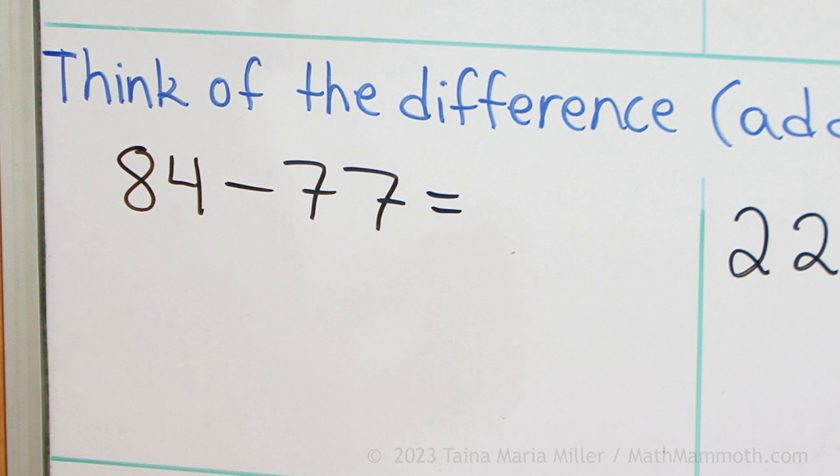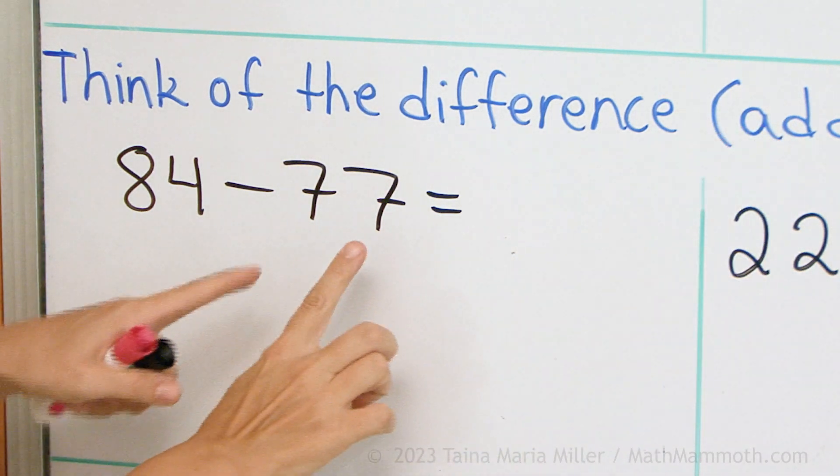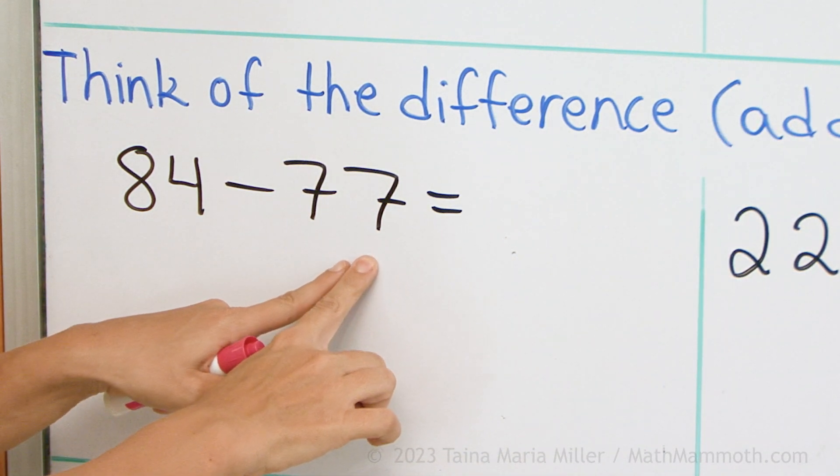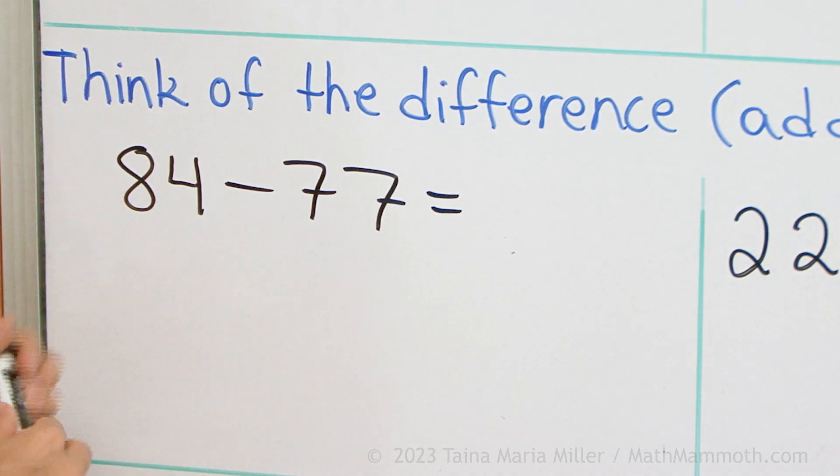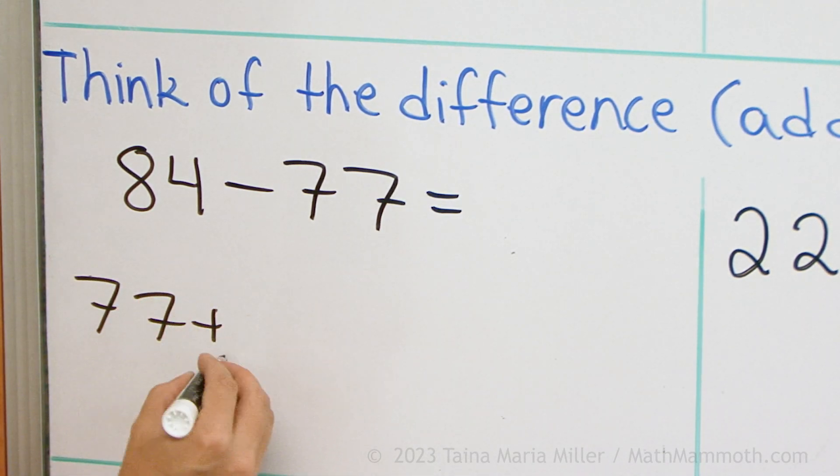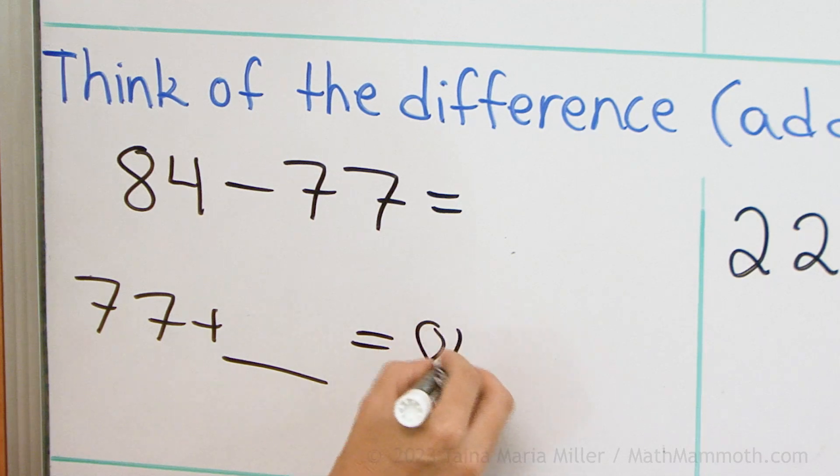And how far apart are 77 and 84? To find that you can add, that's why it says add here. From 77, how many do you need to add to get to 84? Basically, you can think of 77 plus how many more makes 84?